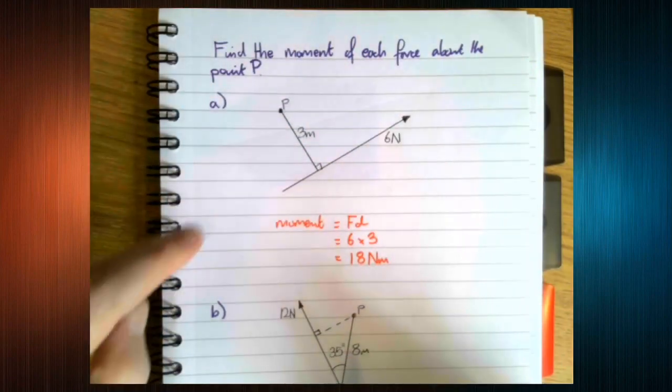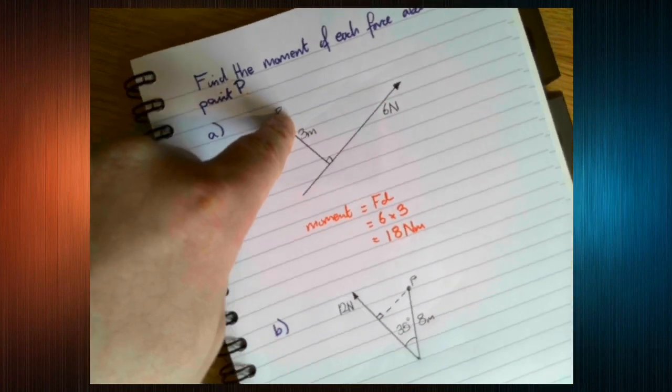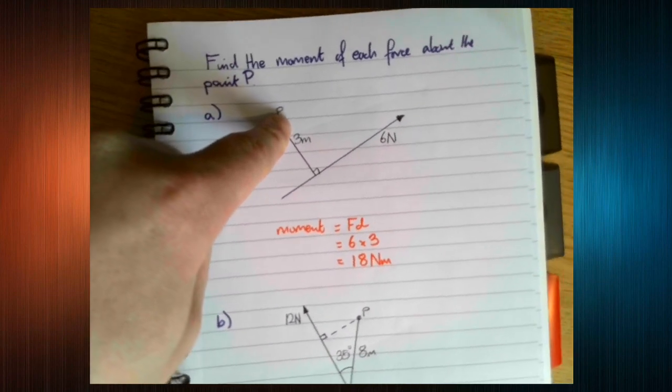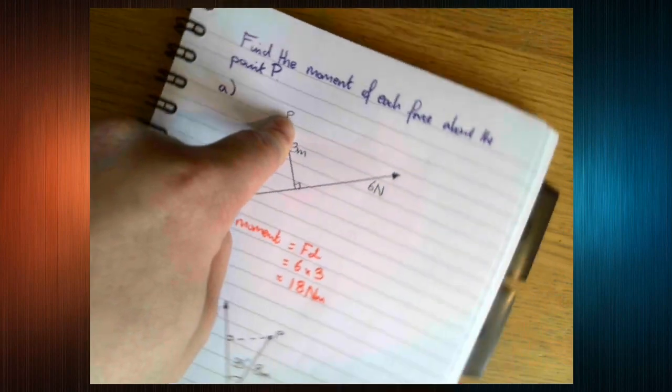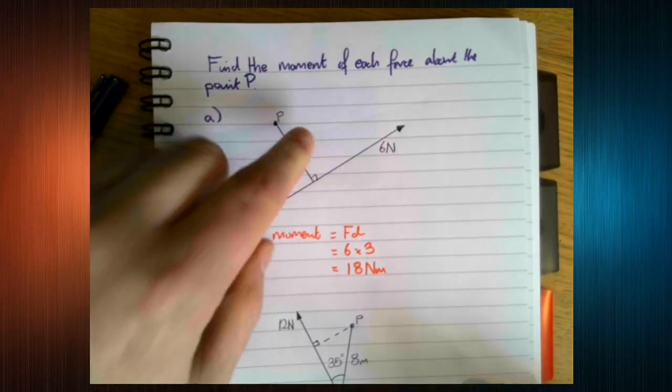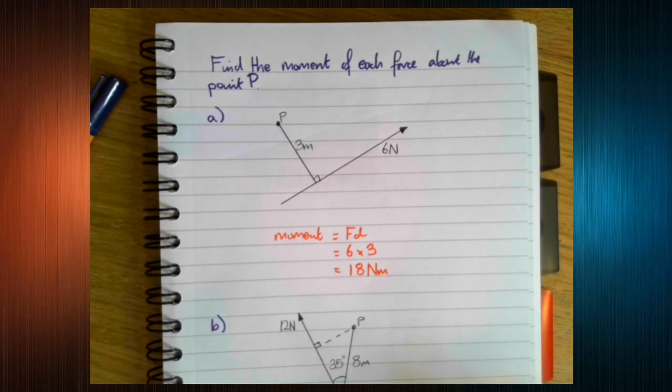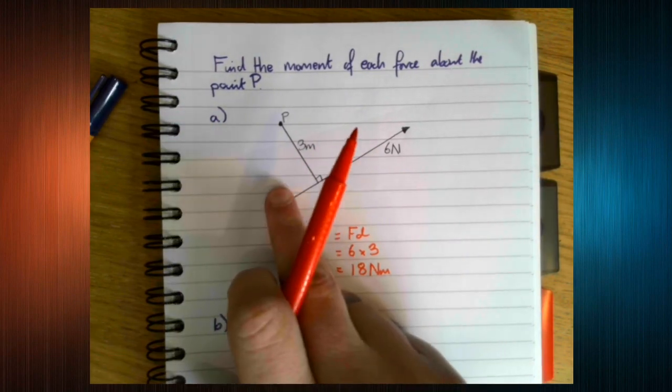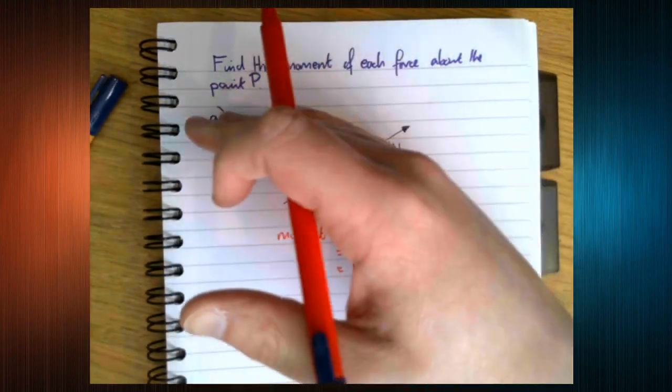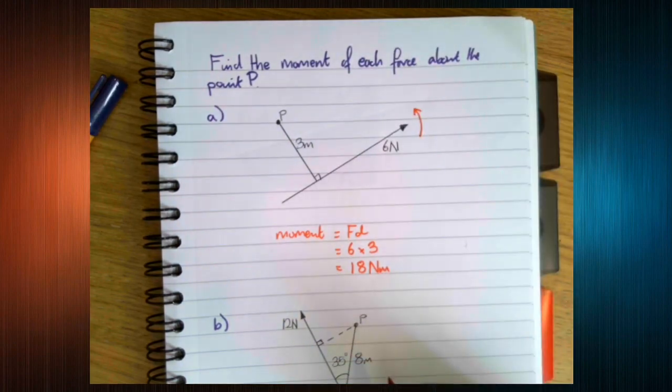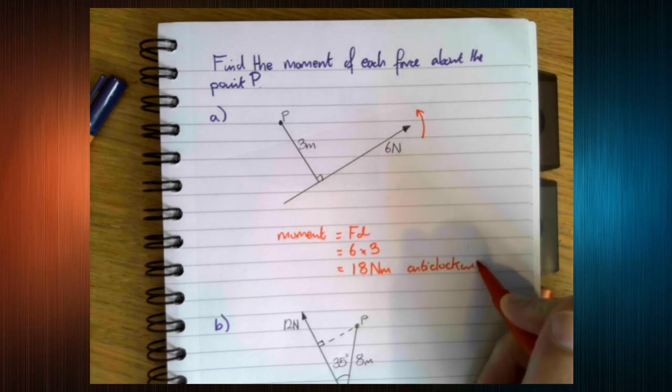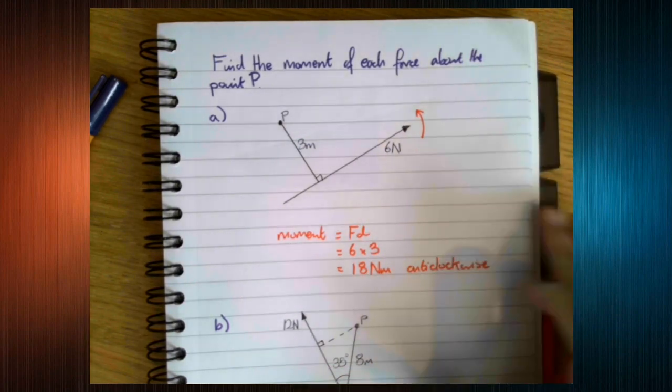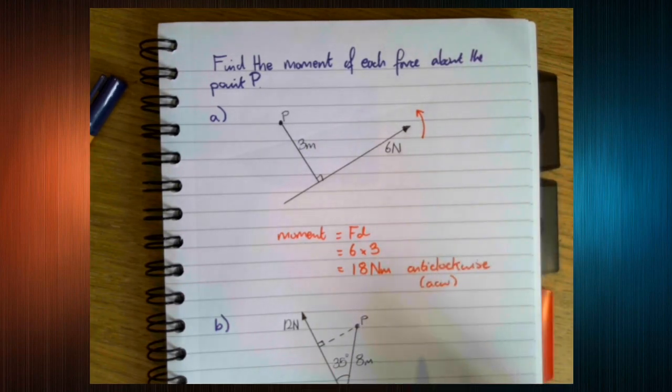The other thing as well, because we are turning, we can see here this force is going to make the paper or the lamina turn this way. Or whatever it is that it is turning, it's going to make it turn this way. If the force was going in the opposite direction, it would turn in the opposite way. So we need to also identify which direction we are turning it. And in this case, the force is making it turn this way. So our turn is going to happen in this direction, which is anti-clockwise.